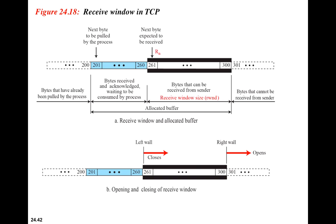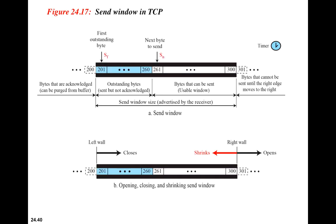To avoid this loss — because TCP is a reliable protocol — to avoid loss due to this overflowing of information on the other end, we make use of something called the sending window and the receiving window. We have two types of windows in TCP: the sending window and the receiving window. Both sides will have a sending window and a receiving window each.